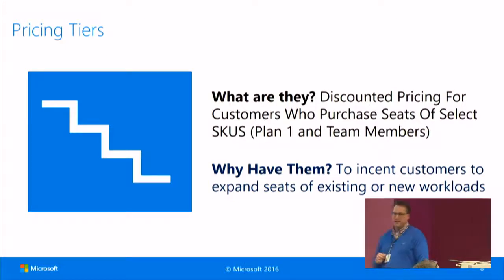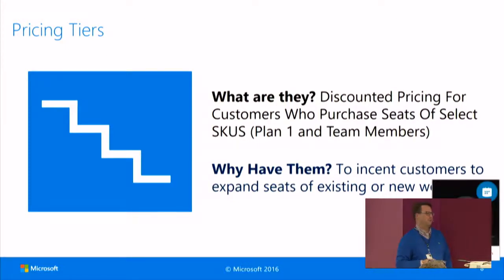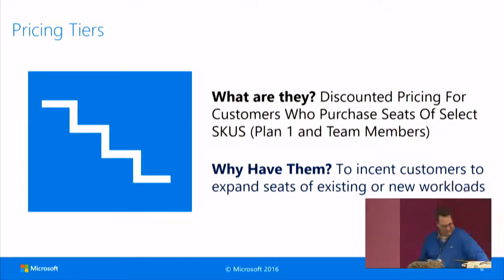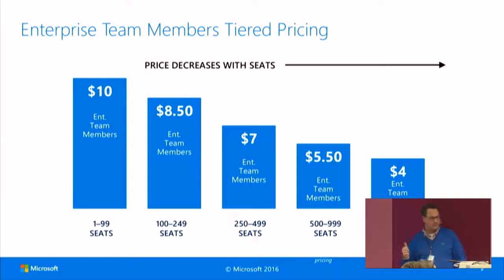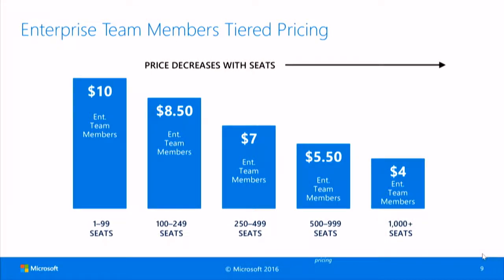Pricing tiers are being introduced, but not for Dynamics Plan Two. Tiered pricing is for the team members. We start at $10 for the first 99 users. If you have 100 to 249 users, it's $8.50. It goes down to $4 if you are above 1,000 seats. The good thing is the AX users, or Operations and Plan Two users, count into the seat total — but they are not reduced in price themselves.